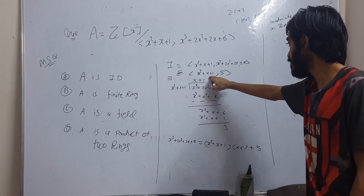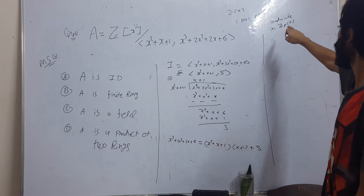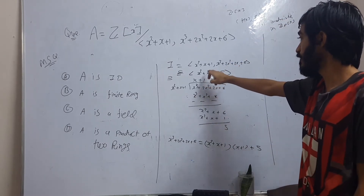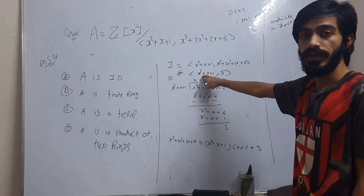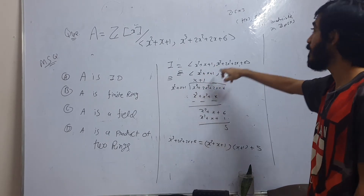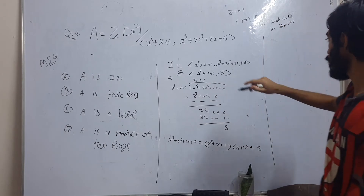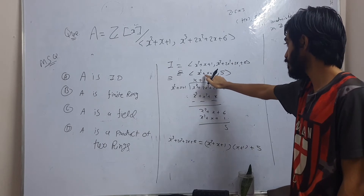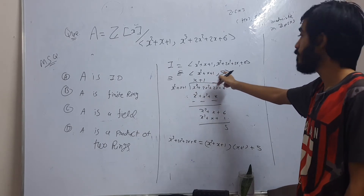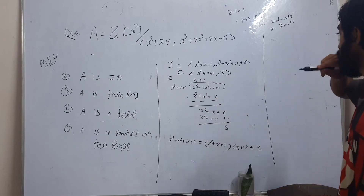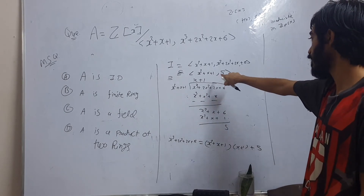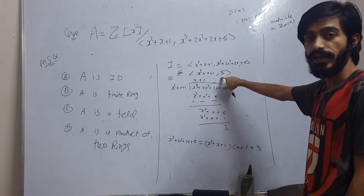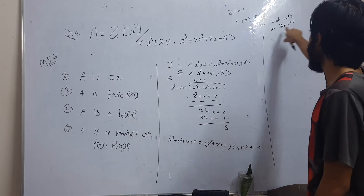Since the degree of this polynomial is 2, it is enough to check whether it has a root in Z_5. If x = 0, then 0 + 0 + 1 = 1 ≠ 0, so 0 is not a root. Checking x = 1 also gives no root. Hence x² + x + 1 has no roots in Z_5, and so it is irreducible, making I a maximal ideal in Z[x].